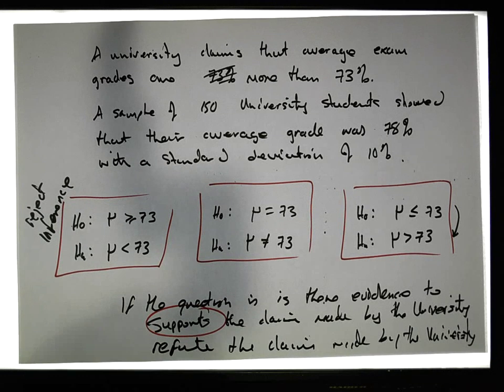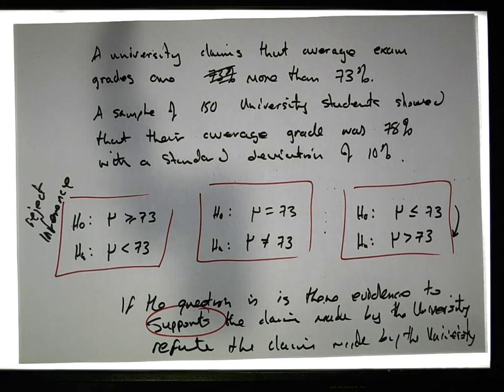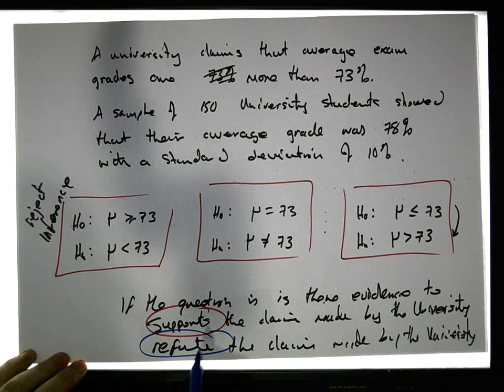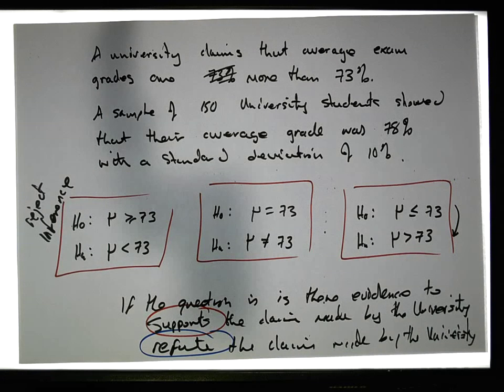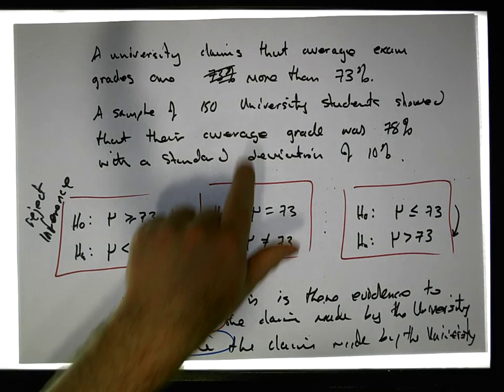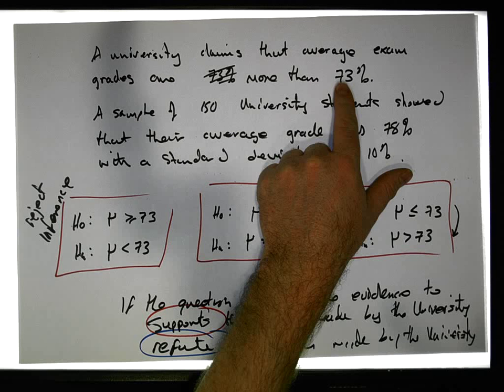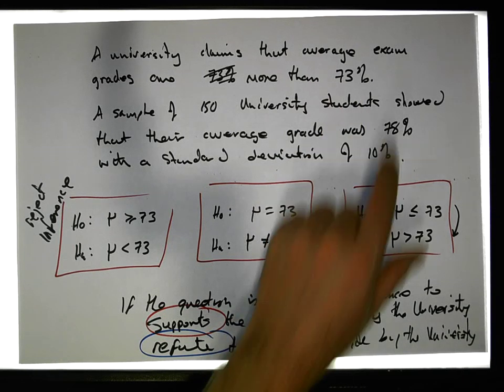Well, let's think about that here. So, refuting the claim - if we're going to refute the claim, well, refuting the claim means that we need to find evidence against this, against the more than 73%.